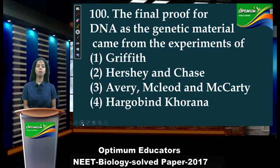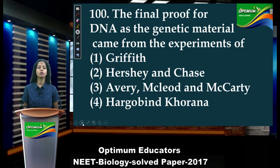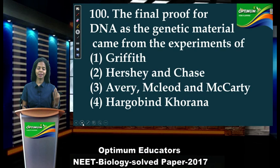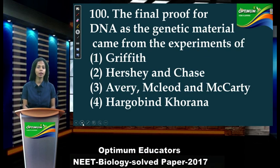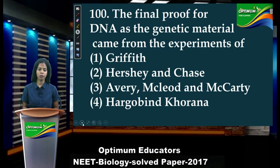Next: 'The final proof for DNA as a genetic material came from the experiments of which scientist?' Three experiments are relevant: Griffith's experiment, Avery, MacLeod and McCarty's experiment, and Hershey and Chase. Griffith identified the transforming principle. Avery, MacLeod and McCarty did good work, but people didn't fully confirm it. The final confirmation came from Hershey and Chase — that is the answer.